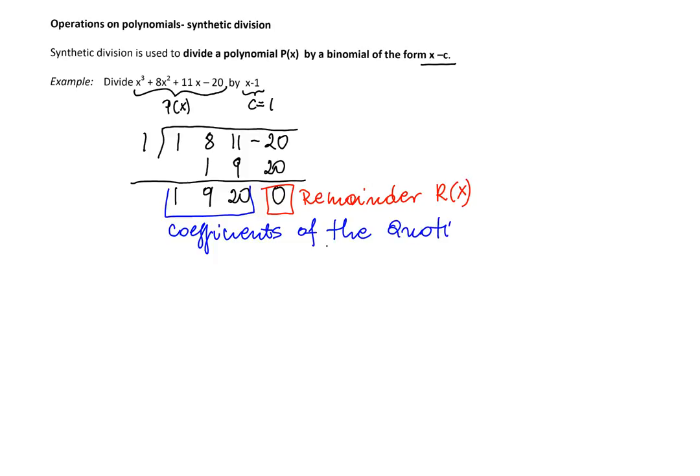Therefore, we can say that Q(x), since I have three coefficients, the Q(x) is the polynomial of the second degree. Q(x) is going to be x squared plus 9x plus 20. And the remainder, R(x), is 0.